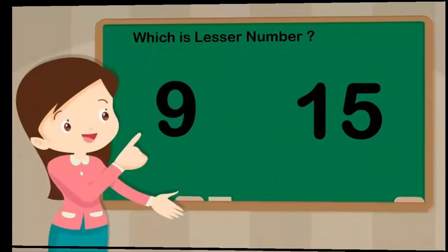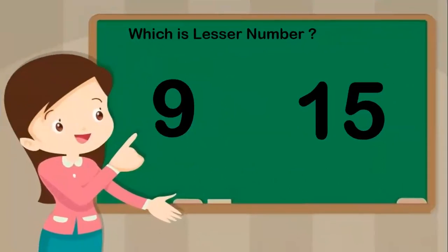One more! Now there are two numbers: number 9 and number 15. Tell me which one is the lesser number. Think and tell me. Yes, it is number 9. Nine is the lesser number. And which one is bigger or greater? Fifteen! Fifteen is the bigger number, and number 9 is the lesser number.